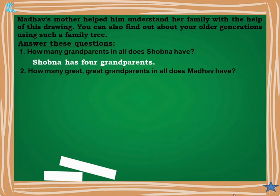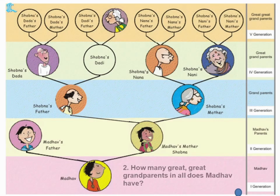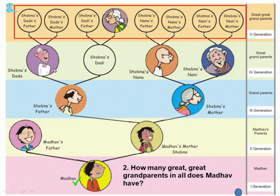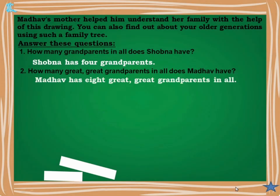Question 2: How many great-great-grandparents in all does Madhav have? Madhav's parents are one generation up, grandparents are next, great-grandparents after that, and great-great-grandparents are four generations up. Each generation doubles: 2 parents, 4 grandparents, 8 great-grandparents, and 8 great-great-grandparents. Answer: Madhav has 8 great-great-grandparents in all.